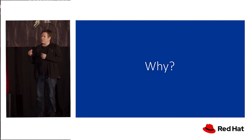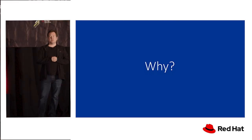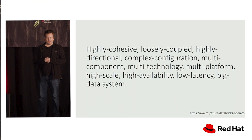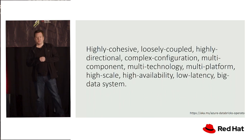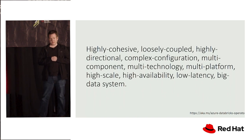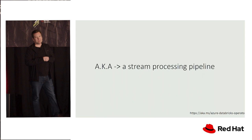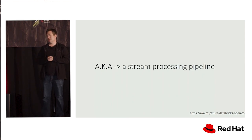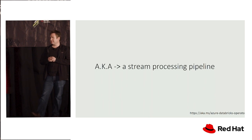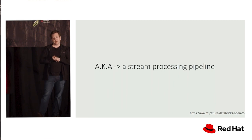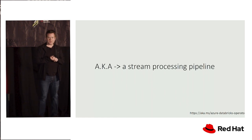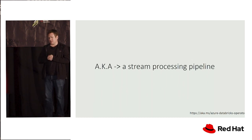This particular customer came along with a use case to build a highly cohesive, loosely coupled, multi-directional complex configuration, multi-component, multi-technology, multi-platform, high-scale, high-availability, low-latency big data system — or in other words, a stream processing pipeline. In this case, it's a flexible stream processing platform that can be reused for many different scenarios. The scenario for this customer involved collecting a lot of data from a river system — water quality data, nitrate levels — to measure the impact of farming operations upriver on ecological downstream areas such as the Great Barrier Reef.